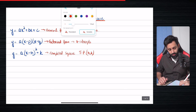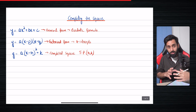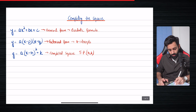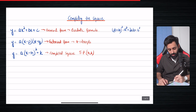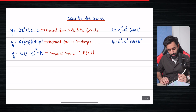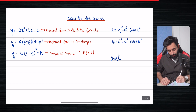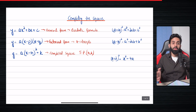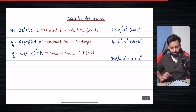Before we dive into completed square form, there are a few things I'd like you to understand. I'm going to expand a few brackets using the first and second algebraic identities. The first identity is: (a + b)² = a² + 2ab + b². The second identity is: (a − b)² = a² − 2ab + b². So let's expand (x + 2)²: that gives x² + 4x + 2², because 2 times x times 2 is 4x. I'm writing it as 2² deliberately, because I want you to pick up a pattern.